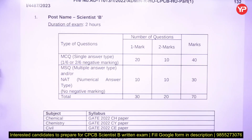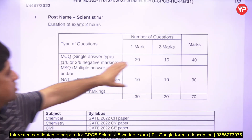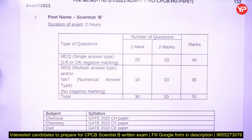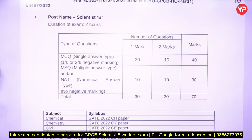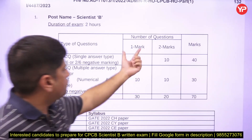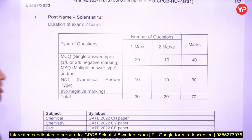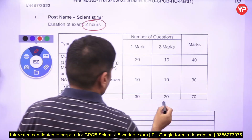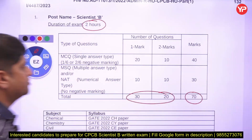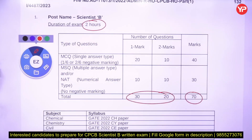The duration is two hours. MCQs have negative marking: one-sixth for one mark questions and two-sixths for two mark questions. For MCQs: twenty one-mark questions and ten two-mark questions will come, totaling forty marks — thirty questions. For NAT: ten one-mark and ten two-mark questions, totaling thirty marks. The paper is two hours, fifty total questions, and seventy total marks.